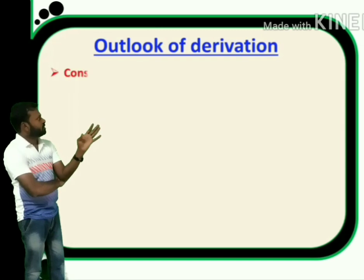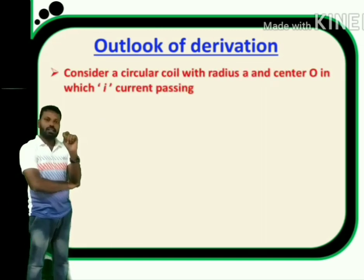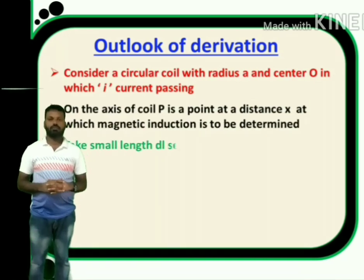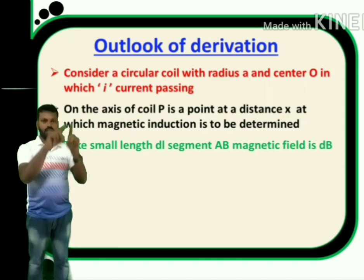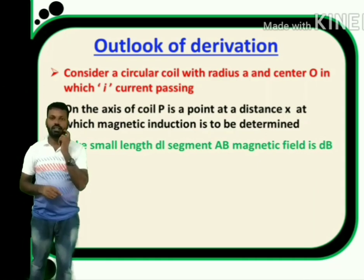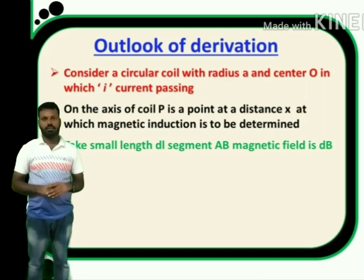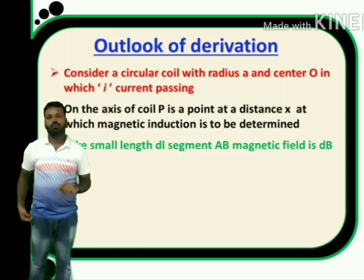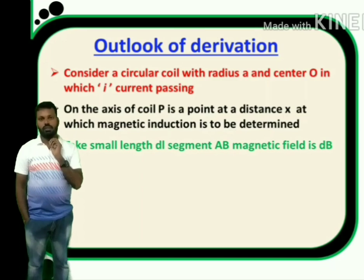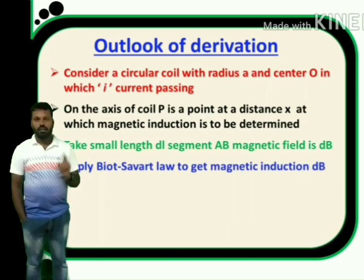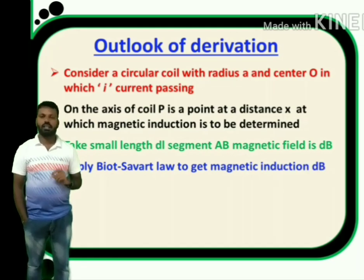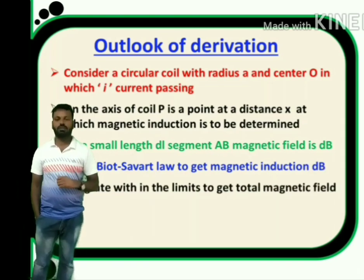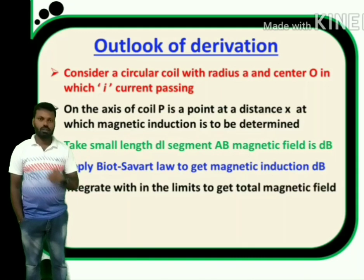The outlook of the derivation is: our aim is to find the magnetic field strength on the axis of a circular coil with the help of Biot-Savart law. For this, we consider a coil with radius A on which current I is passing in anti-clockwise direction. On the axis of this coil, at a distance x, there is a point where we have to find out magnetic induction. We apply Biot-Savart law to find the magnetic field due to a small line segment, then integrate within the limits to get magnetic induction due to the whole circular coil.